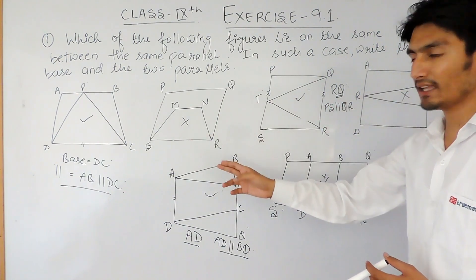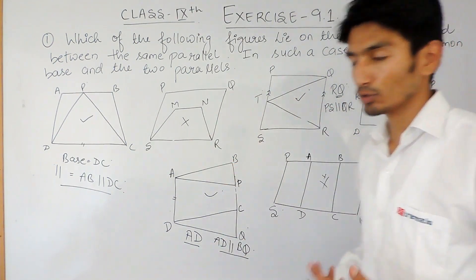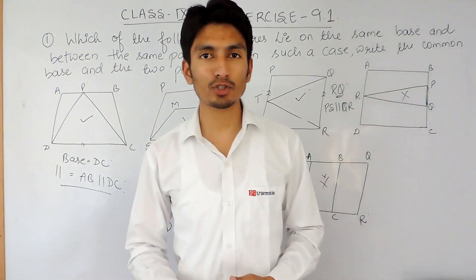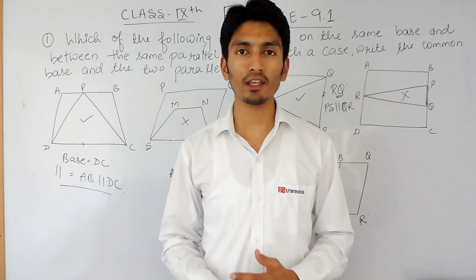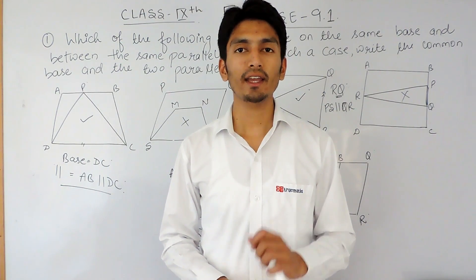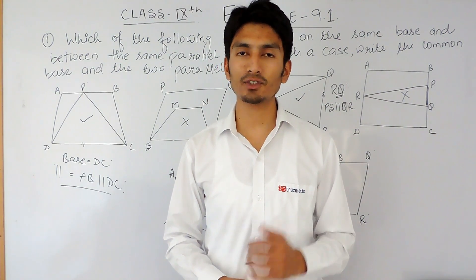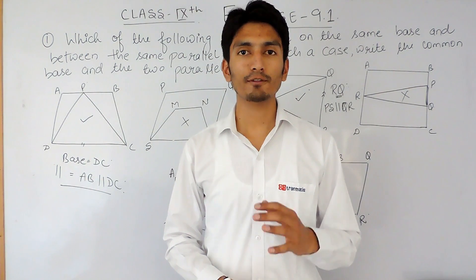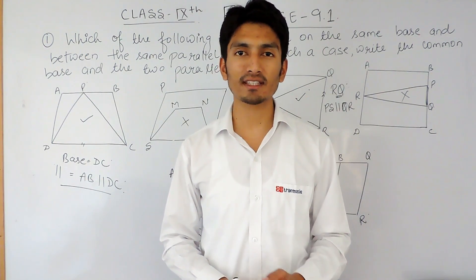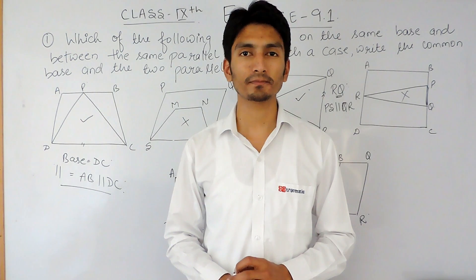So the figures having the same base and lying between the same parallels are figures 1, 3, and 5, and I have written the same base and the parallel sides. This is how we can solve this question. I hope you have understood. If you like this video please subscribe to our channel. If you have any problem in maths you can directly contact us — the phone number, email address, and WhatsApp number are given below in the description. Thank you.